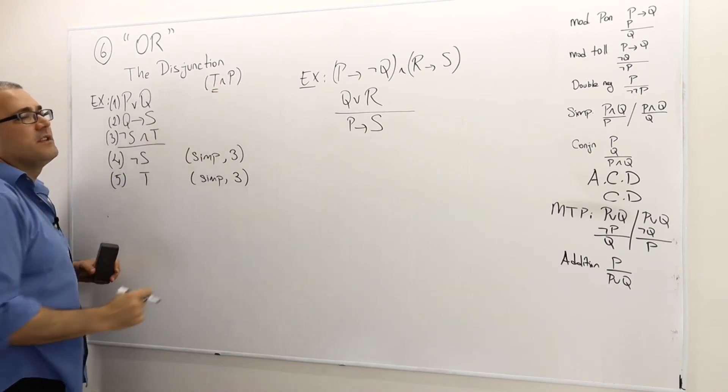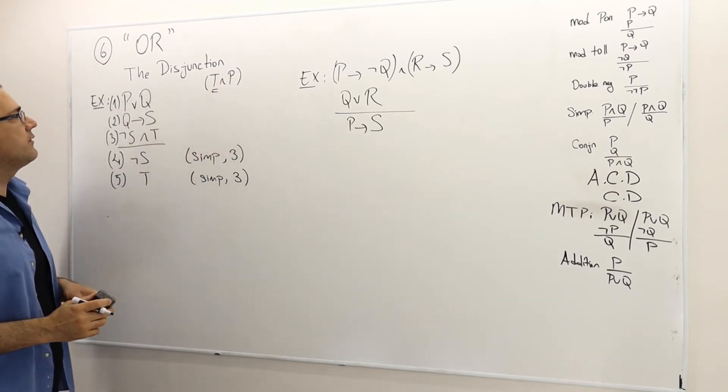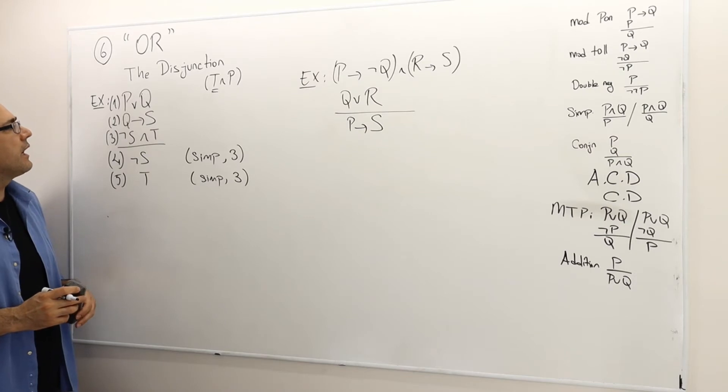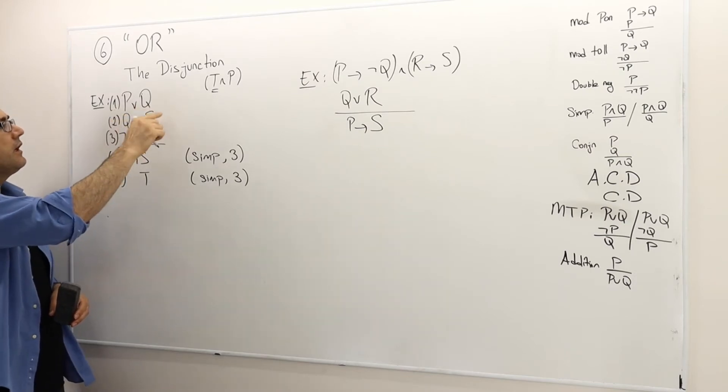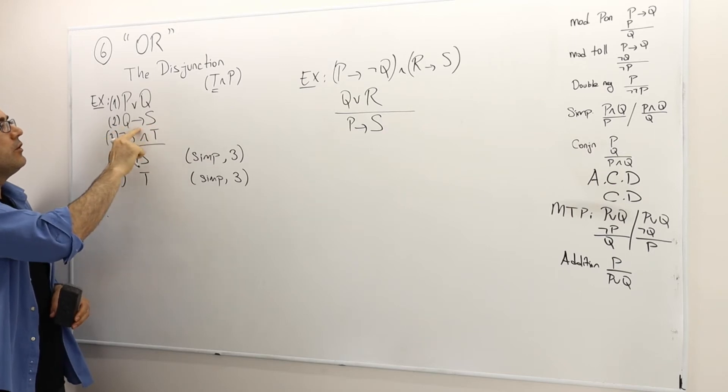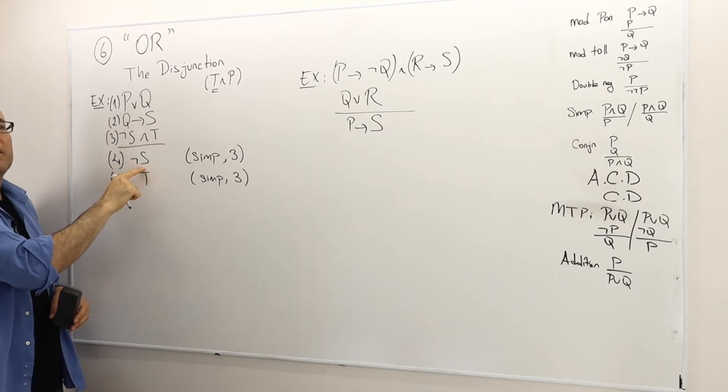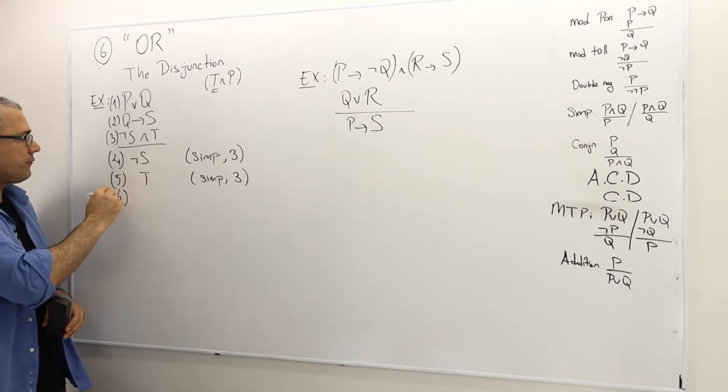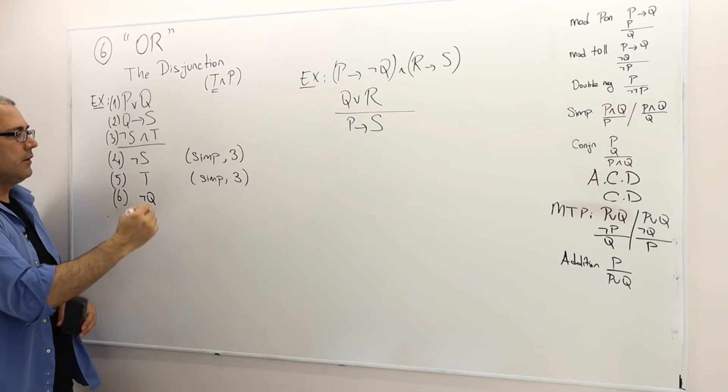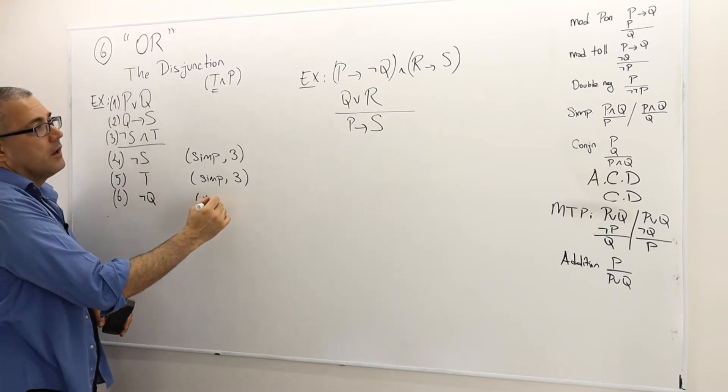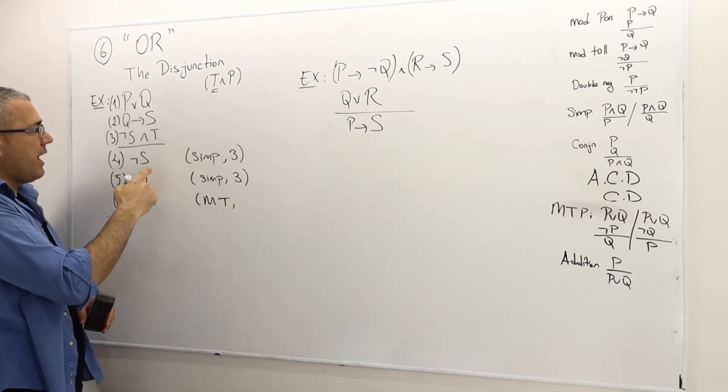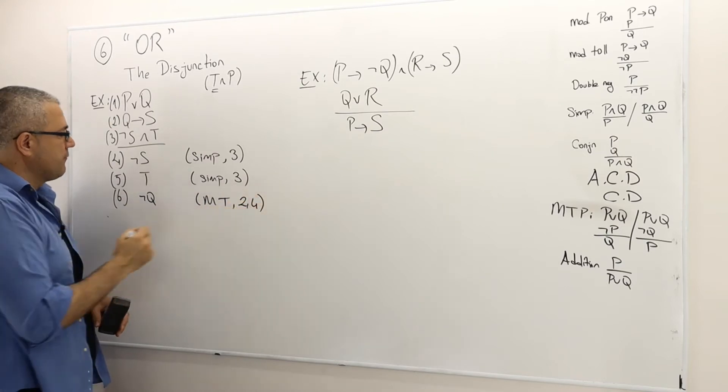By the way I got T already. So all I have to do is to prove that P is true. Well what else can I learn? Now let's look at the second statement. Q implies S and then the fourth not S. So this is a standard modus tollens. Therefore I must have not Q true. So this is modus tollens, let me denote it MT between the arguments two and four.